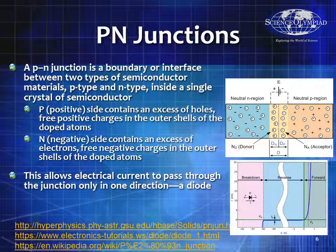Let's talk about what forms a PN junction. A PN junction is a boundary or interface between two types of semiconductor materials: a P-type and an N-type. You take a normal semiconductor like silicon and then dope it. On the positive side, you dope it with excess holes, which are free positive charges in the outer shells of the doped atoms — you get a positive ion and inject that into part of the semiconductor.